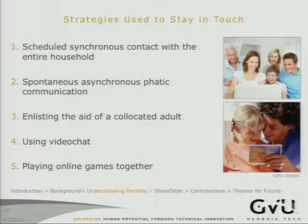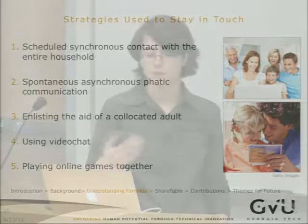I looked at strategies that these families had for staying in touch, as well as the problematic aspects of these strategies. There's a typical way in which remote contact happens: the remote parent calls or Skypes the co-located parent, the phone is passed around, and other household members get a chance to talk as well. It's usually scheduled by the remote parent. The main challenge is that it's not always easy to get kids to want to talk on a schedule - it frequently feels like pulling teeth and getting one-word answers.